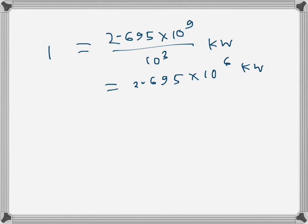This is the kilowatts of power. We have to multiply by the number of hours in one year to get kilowatt-hours in a year. So kilowatt-hours will be equal to 2.695 × 10^6 times 24 hours in one day times 365 days in one year.